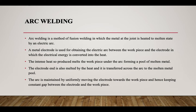Arc welding is a method of fusion welding in which the metal at the joint is heated to a molten state by an electric arc. A metal electrode is used to obtain the electric arc between the workpiece and the electrode, converting electrical energy into heat. The intense heat melts the workpiece under the arc, forming a pool of molten metal. The electrode end also melts and is transferred across the arc to the molten metal pool. The arc is maintained by uniformly moving the electrode towards the workpiece, keeping a constant gap.